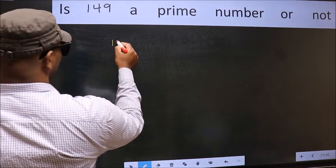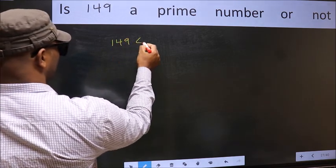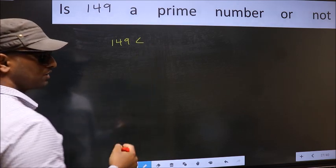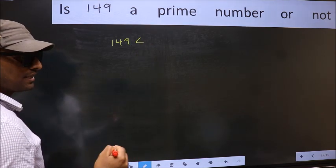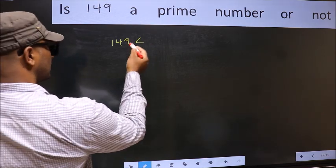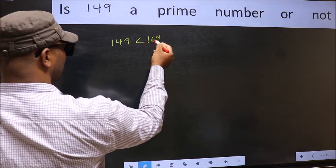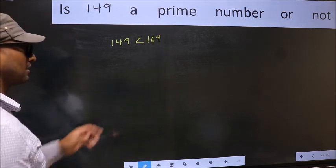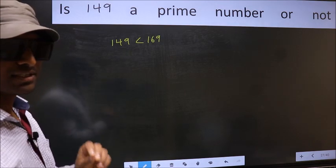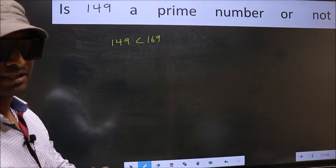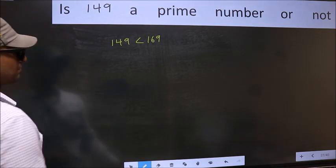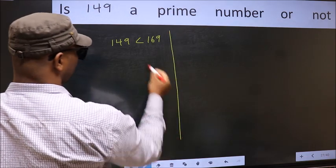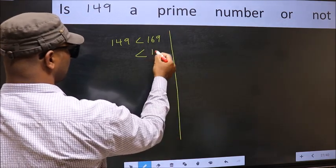Given number is 149. This is close to which perfect square number? This is close to 169, a perfect square number. This is step 1. Next, 169 is nothing but 13 squared.